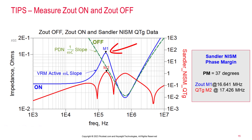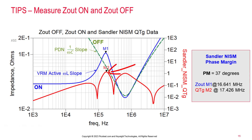The impedance peak caused by the output capacitor resonating with the control loop active output inductance is the correct peak for the M1 marker. This peak is visible in the on-state blue trace but disappears in the off-state green dashed trace. M2 is then placed on the red trace QTG peak that is closest to the frequency of the M1 impedance peak.